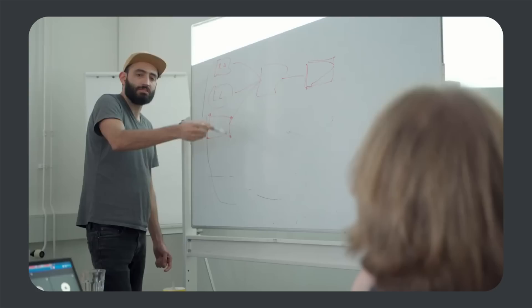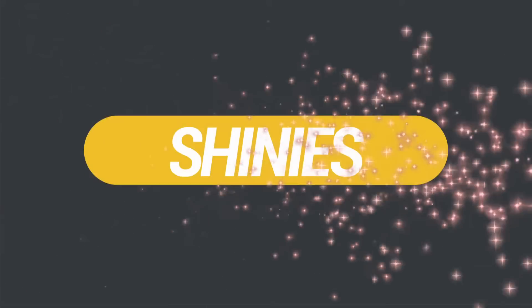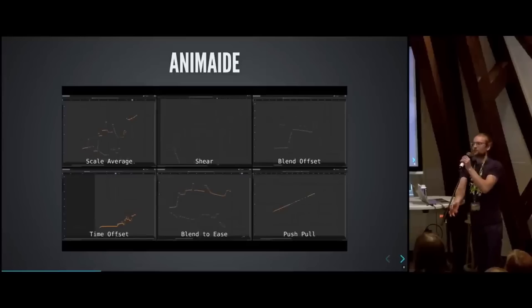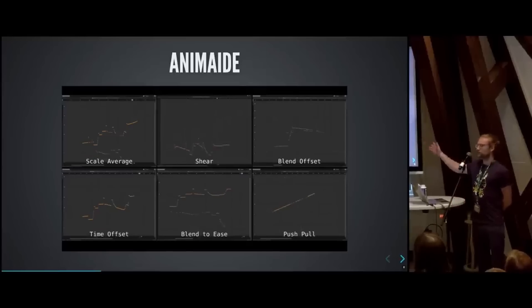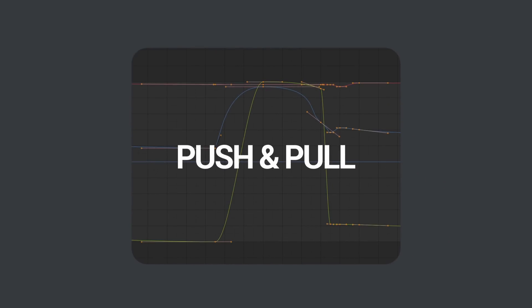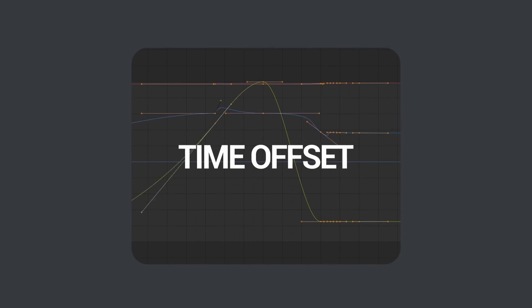Creating an entirely new animation system isn't easy, and coming off a year of development, there's already been huge progress with a bunch of new features — and they call these the Shinies. Everything I'm about to show you is available right now in Blender 4.0. The graph editor is now a powerhouse, with a whole new suite of tools that let us do cool things like push and pull keyframes, scale by average, and even time offset your animation.